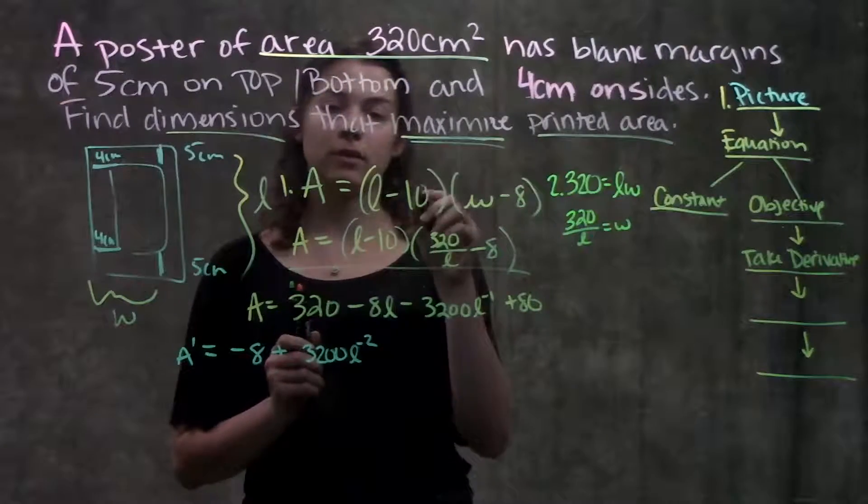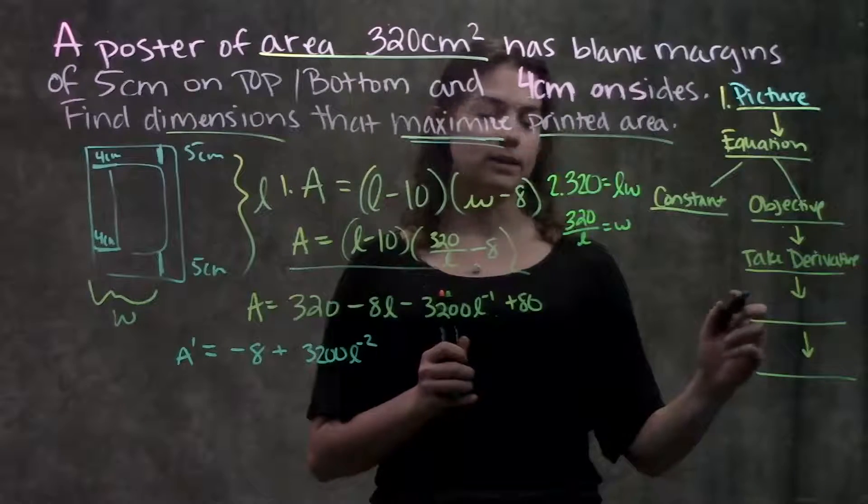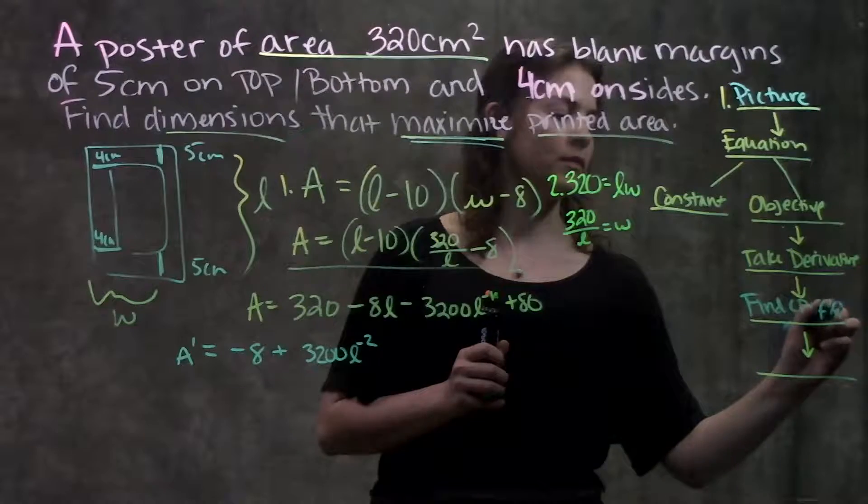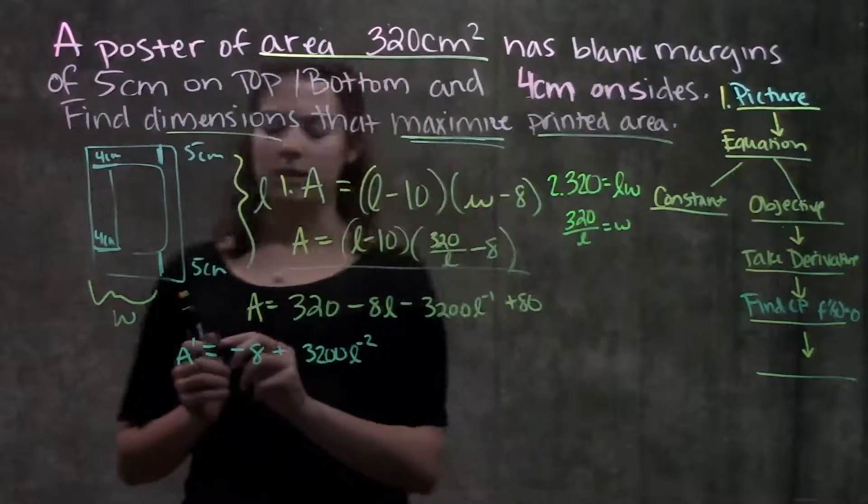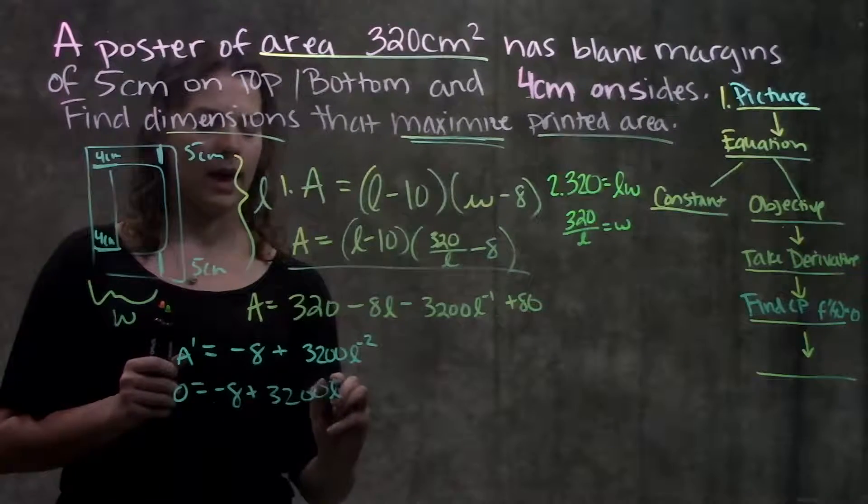Alright, so I have my derivative. Remember, in order to maximize an equation with my derivative, I'm going to need to find the critical points. And to find the critical points, I set the derivative equal to 0. So take this function, set it equal to 0, and solve for my variable L.